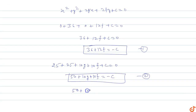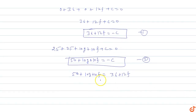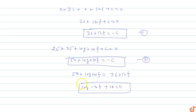From equations one and two: 50 + 10g + 10f = -c and -c = 36 + 12f. Substituting, we get 10g - 2f + 14 = 0. This is equation three.